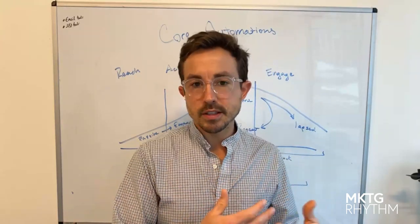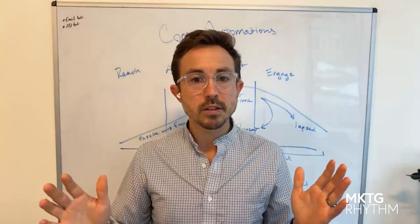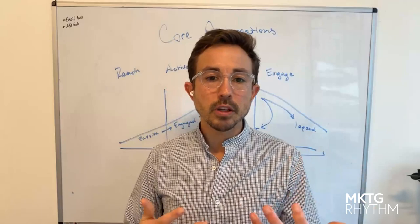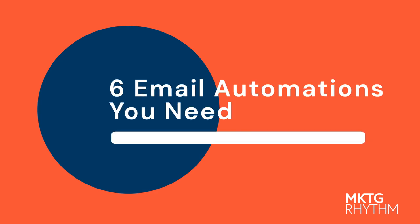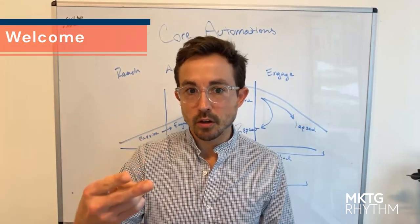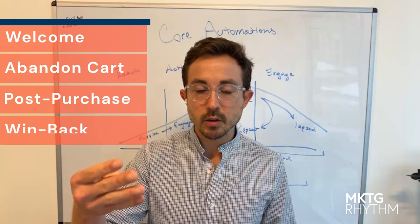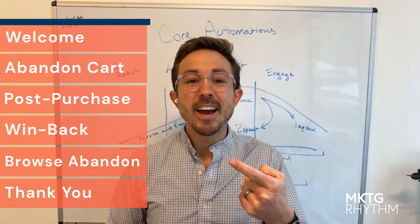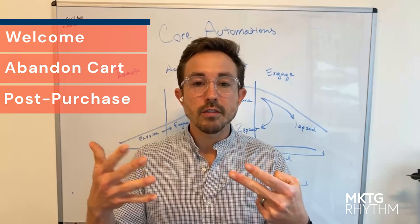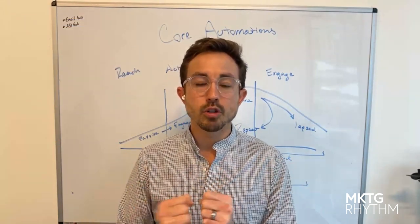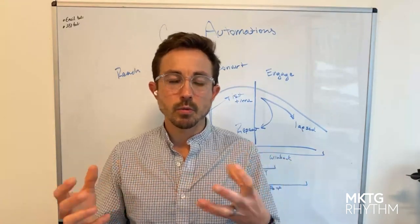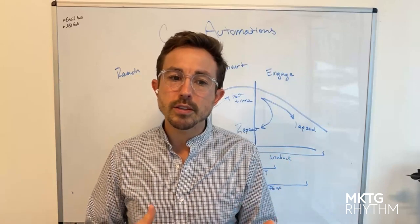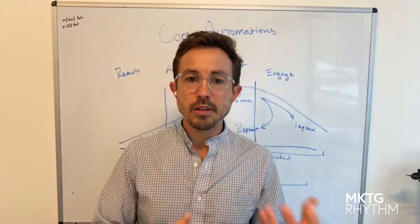Basically, how do we build a system that helps create the customer behaviors we want to see in a really seamless, smooth way that gives us visibility and touch points across that customer journey? For us, we like to start with six foundational automations for our e-commerce clients: the welcome sequence, the abandoned cart sequence, a post-purchase sequence, a win-back sequence, a browse abandonment sequence, and a thank you sequence. All of these give us different angles to approach our audience and different ways to communicate the values we're offering.